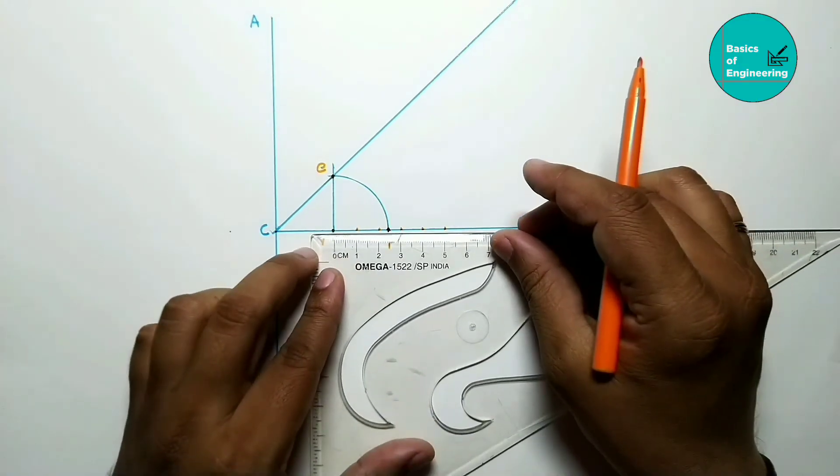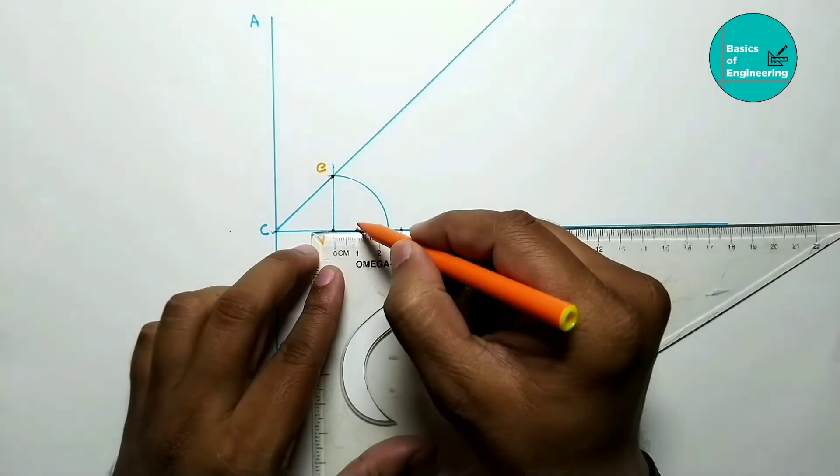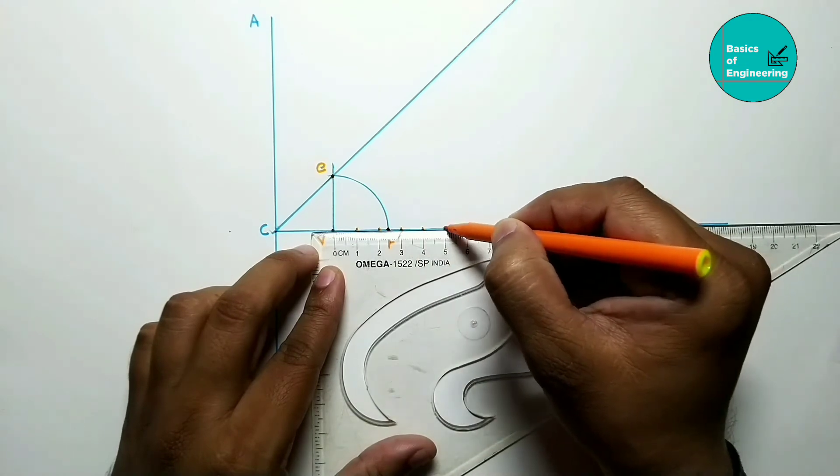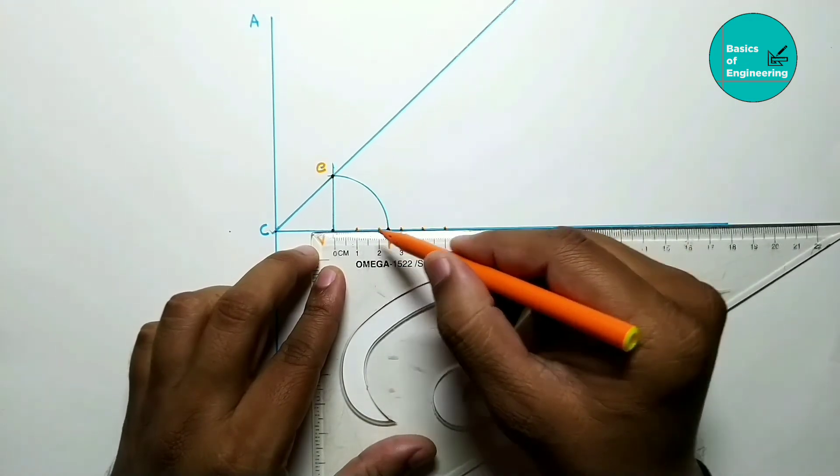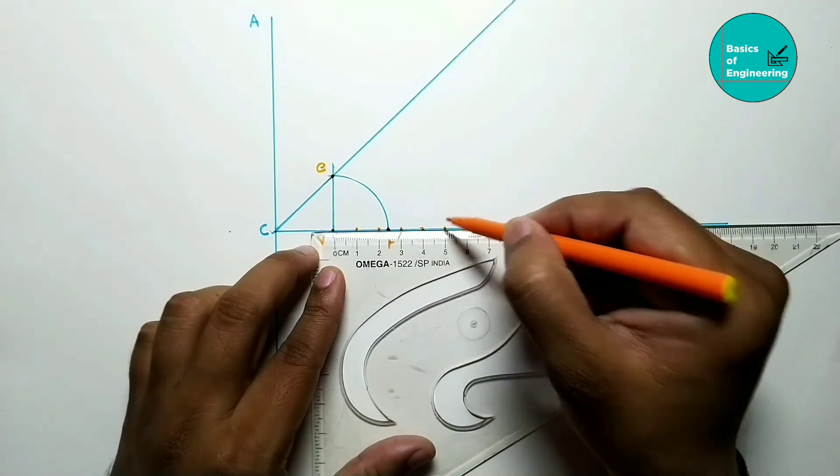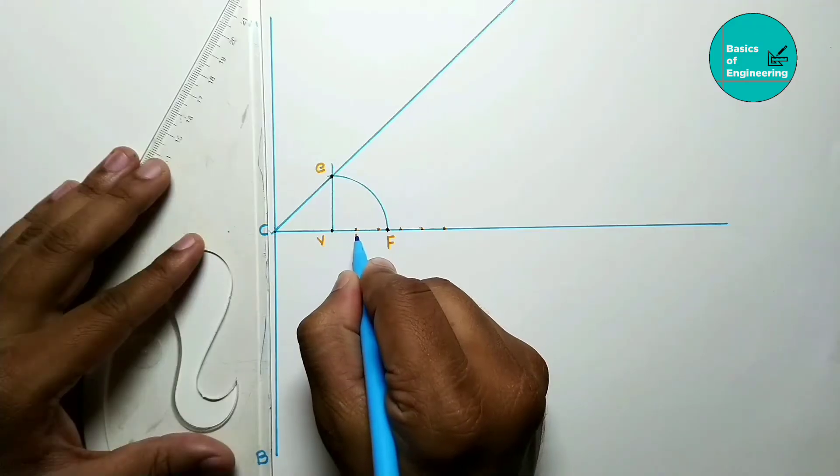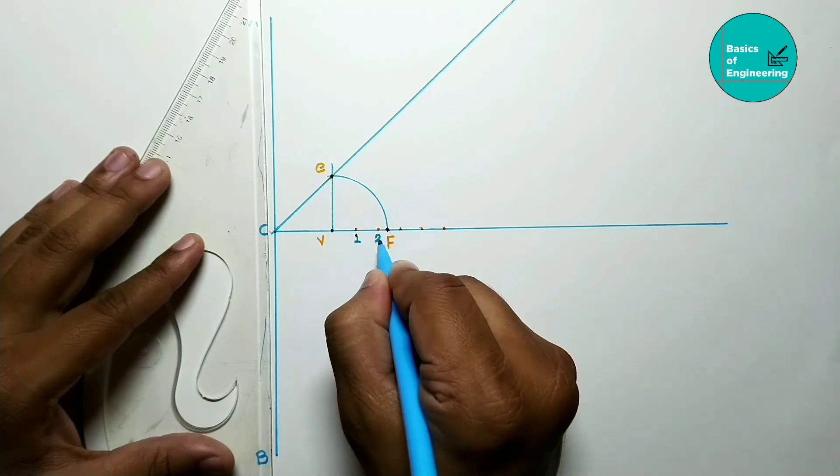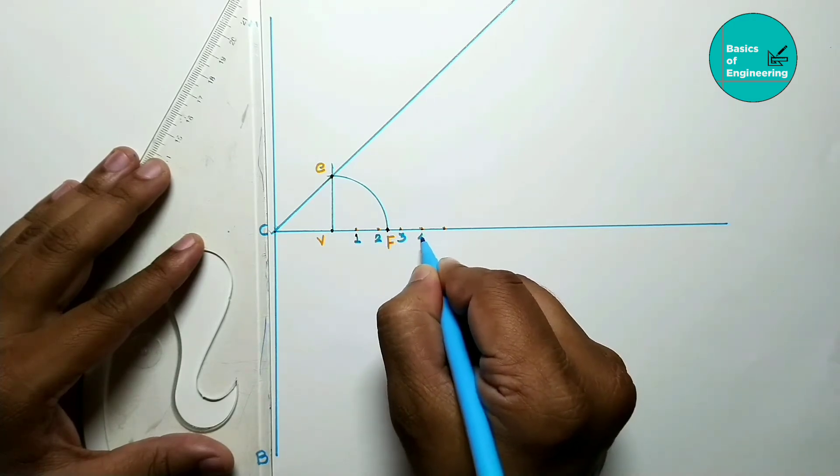After that, take some points from vertex which are at equal distance. I am going to take 10 mm because it is easy to plot. So at 10 mm, take a few points, 4 to 5 points. Give the name for each point: 1, 2, 3, 4, and 5.